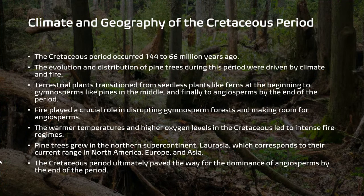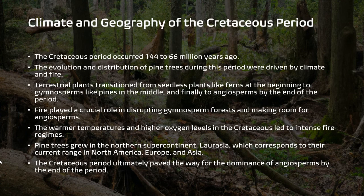During the Cretaceous period, which occurred 144 to 66 million years ago, the evolution and distribution of pine trees was largely driven by climate and fire. The period was a time of transition for terrestrial plants: seedless plants like ferns dominated the beginning, gymnosperms like pines in the middle, and angiosperms ruling by the end. Fire played a crucial role in disrupting gymnosperm forests and making room for angiosperms. The warmer temperatures and higher oxygen levels in the Cretaceous led to especially intense fire regimes. Pine trees grew in the northern supercontinent Laurasia, which corresponds to their current range in North America, Europe, and Asia. Ultimately, the Cretaceous period paved the way for the dominance of angiosperms by the end of the period.